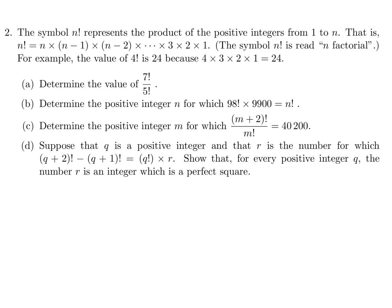The symbol n factorial represents the product of the positive integers 1 to n. That is, n factorial is equal to n times (n-1) times (n-2), dot dot dot, all the way down to 3 to 1. For example, the value of 4 factorial is 24 because 4 times 3 times 2 times 1 is equal to 24.